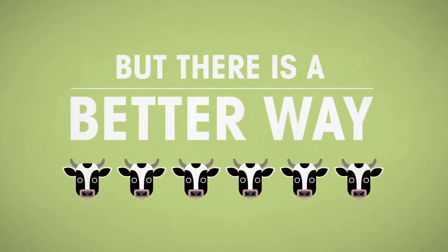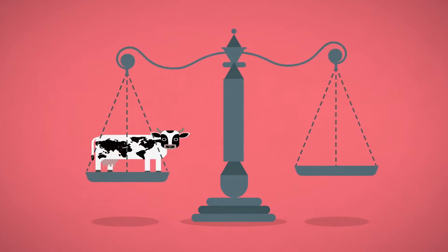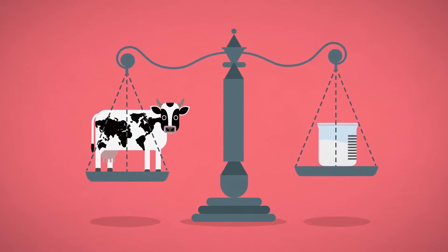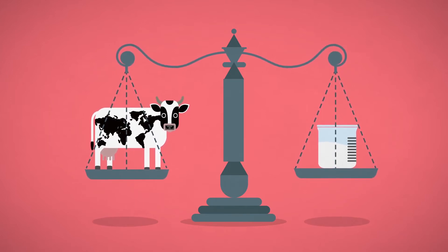If each cow produced just over half a glass more milk each day, it will be enough to meet our growing need. Healthy cows produce more milk, so increased efforts to keep cows free from disease is one way to achieve this.